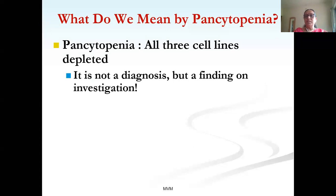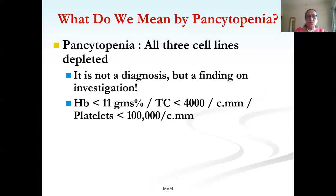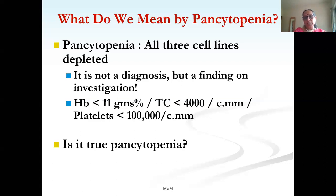One must understand that you don't make a diagnosis clinically. After you see the CBC and all three cell lines are depleted, that means the child has pancytopenia. Conventionally in children — older children, infancy and above, not neonatal — a hemoglobin of less than 11 g%, total count less than 4000 with ANC less than 1000, and platelets less than 100,000 per cubic millimeter define pancytopenia. Always verify whether the report is true.